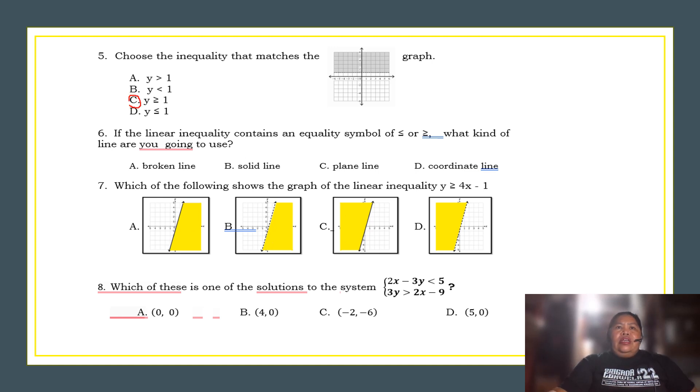For number six, if the linear inequality contains an equality symbol of less than or equal to or greater than or equal to, what kind of line are you going to use? A. Broken line. B. Solid line. C. Plain line. Or D. Coordinate plane. The answer is solid line. So, if there is an equal sign, you have to use solid line.